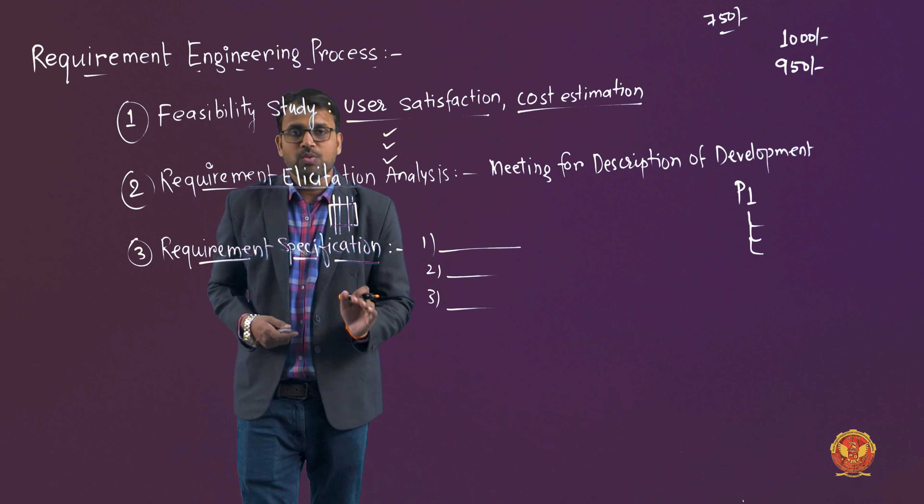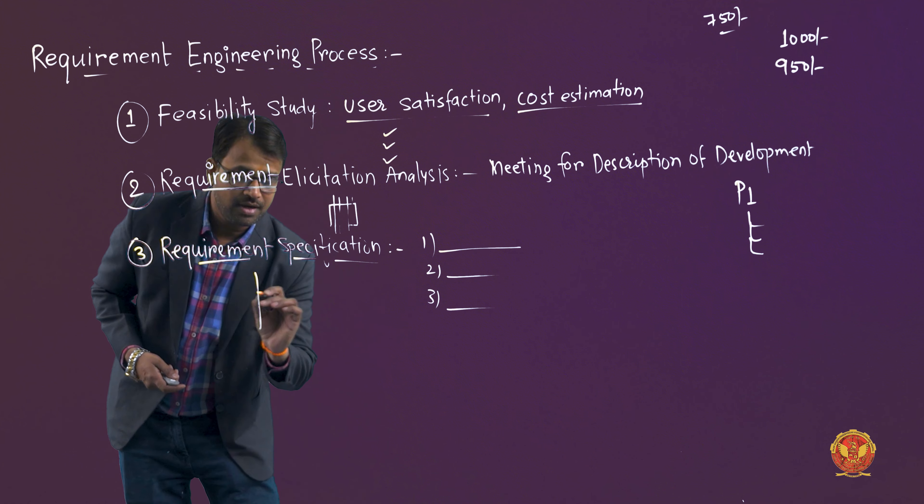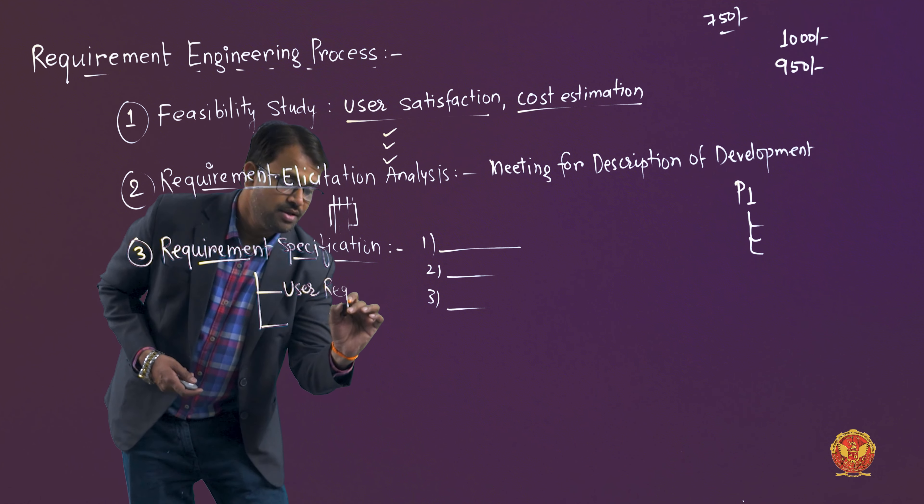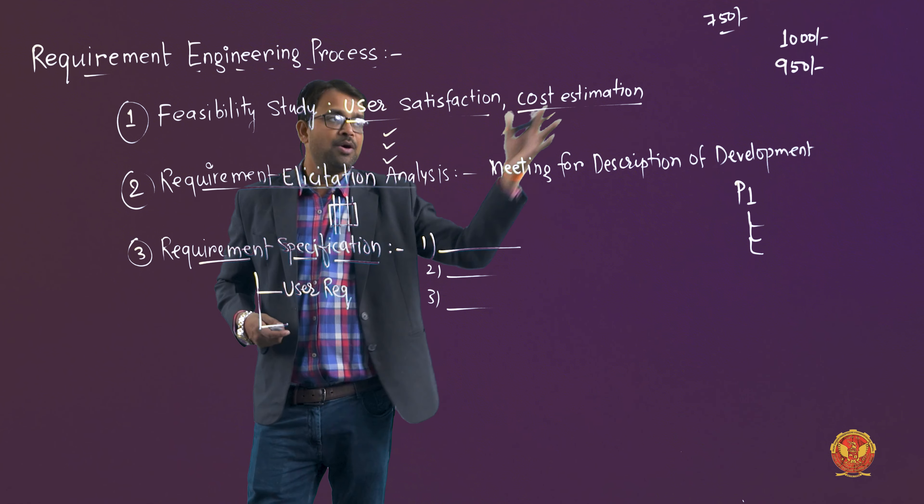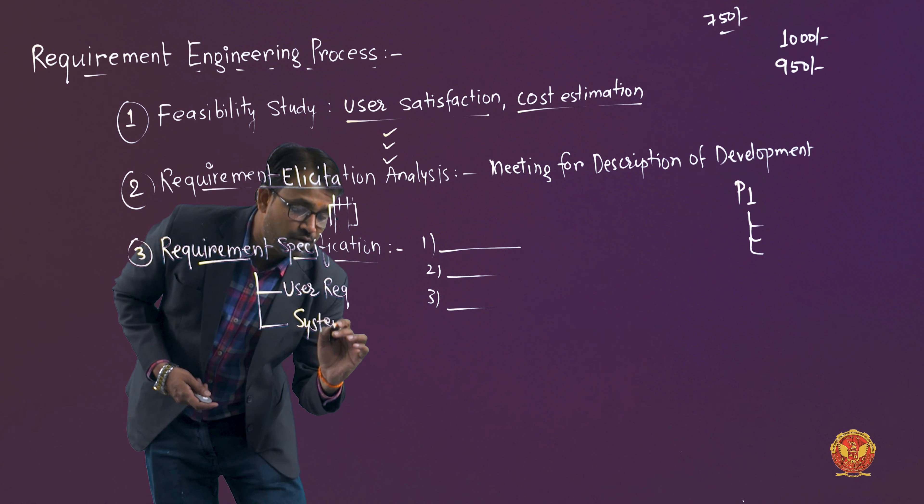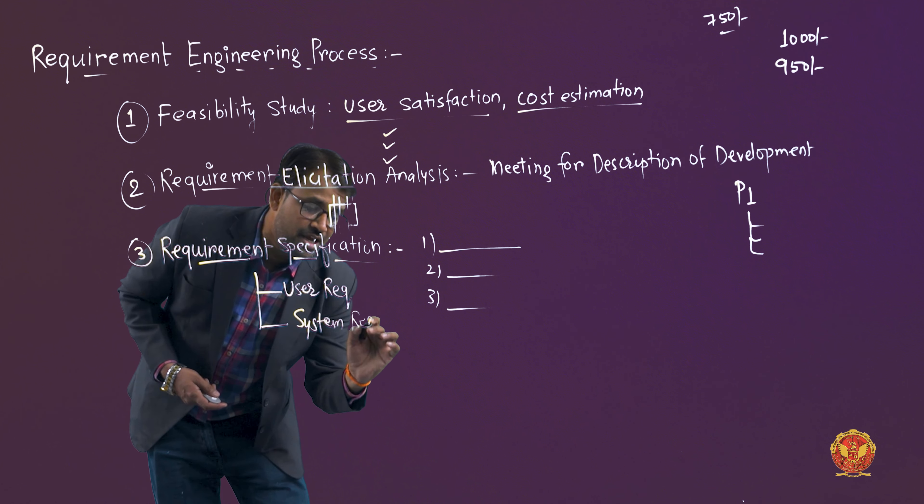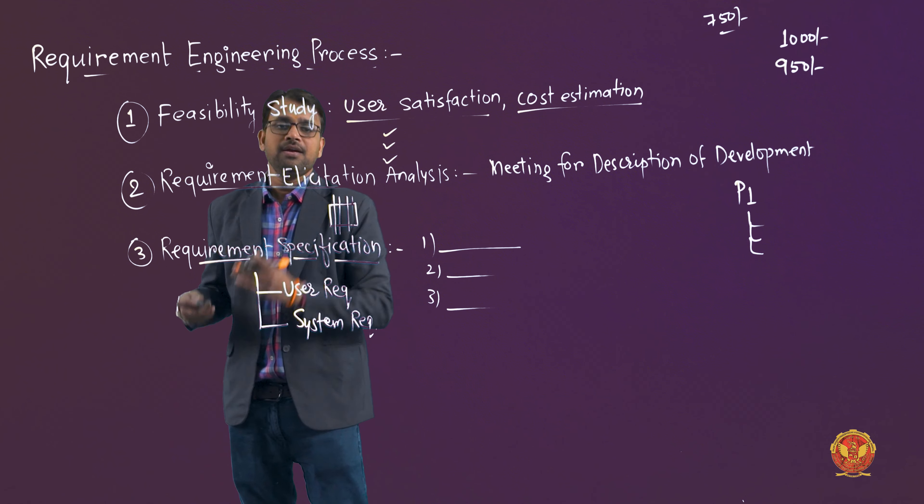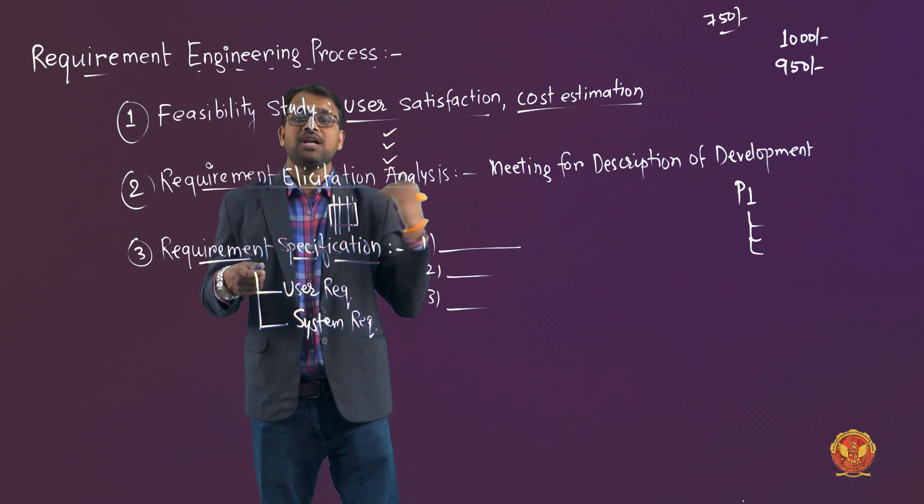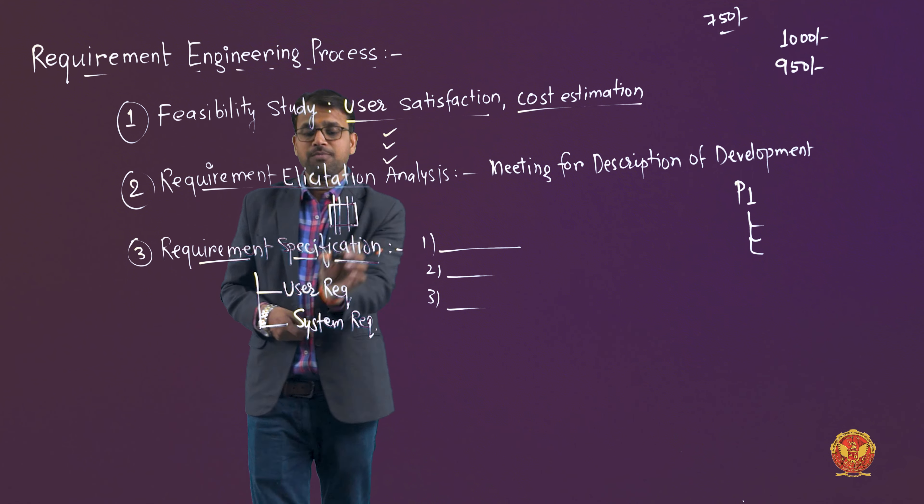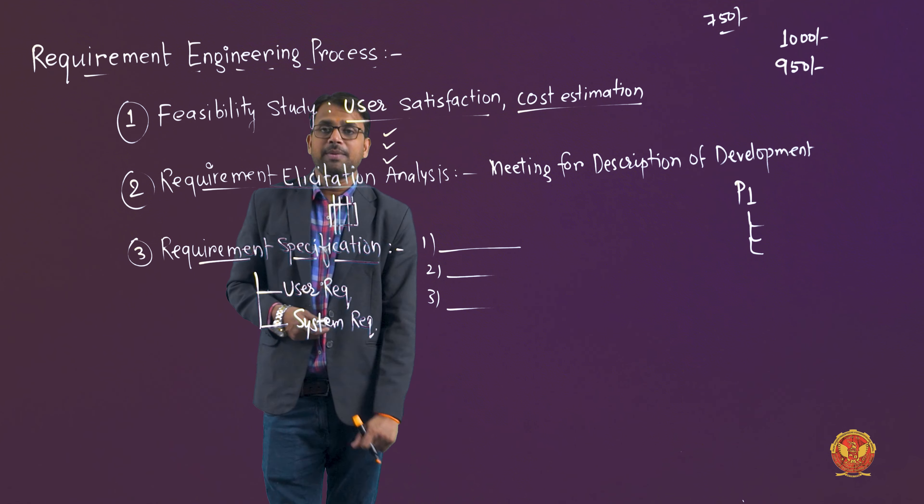So there are two types of requirements. The first one is user requirement and second one is system requirement. User, meaning the customer who is giving us the amount, who is paying us. What does system requirement mean? To build that particular solution, what provisions we have thought at the system level. What does this mean? Should we build it on Dot net or Java? Which support system will be there? Which managerial tool will be there? All these things are your system level requirements apart from user requirements. So these are two types of requirements.